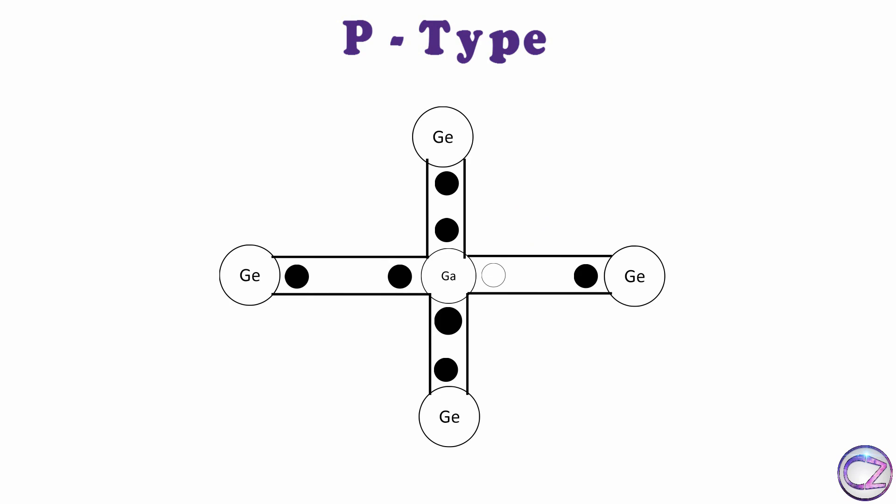When another electron comes to fill this hole to stabilize this lack, then that electron creates a hole again. It's a continuous process. Holes move from one place to another place and mind it, holes are positive charge carriers. But how? Simply think: electrons have negative charge, and we know only positive charge can neutralize negative charge.